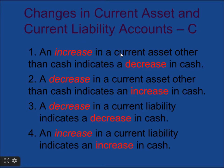The rule is: an increase in current asset other than cash indicates a decrease in cash — increase-decrease. For current assets, follow increase-decrease or decrease-increase. For current liabilities, follow decrease-decrease or increase-increase. A decrease in current asset other than cash indicates an increase in cash. A decrease in current liability indicates a decrease in cash. An increase in current liability indicates an increase in cash.